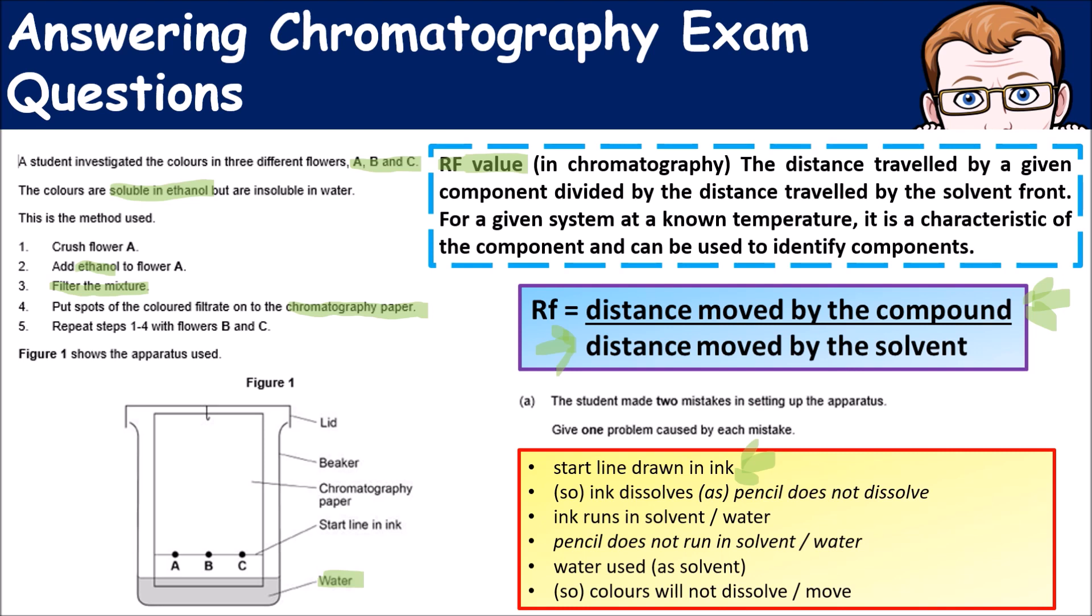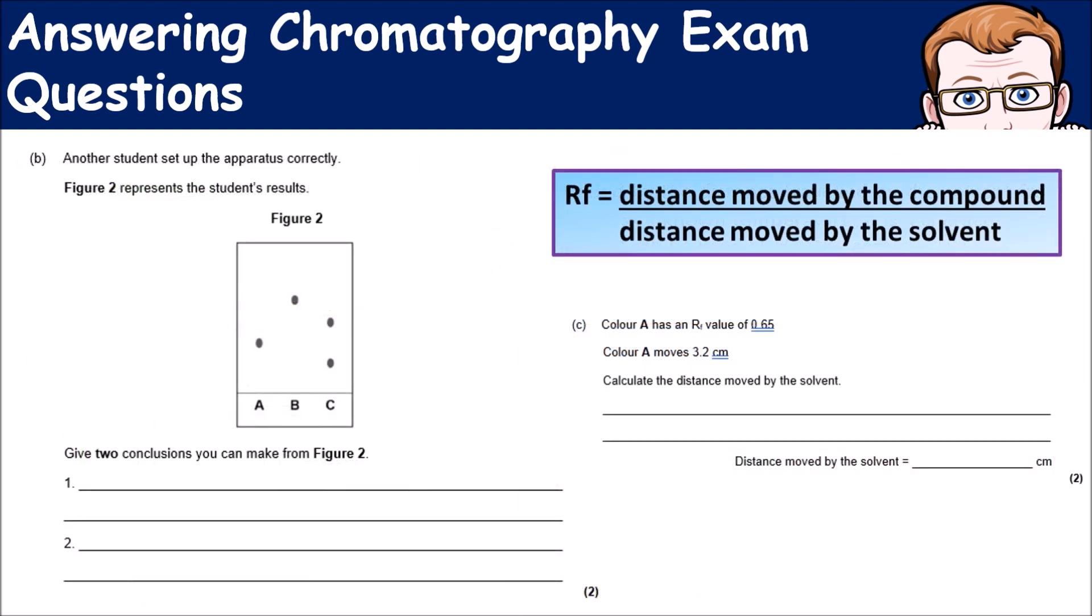The solvent they're using is water. They've already said in the question that it's not soluble in water, only in ethanol. So if we use water as a solvent, you're going to get no movement of anything up the chromatography paper.